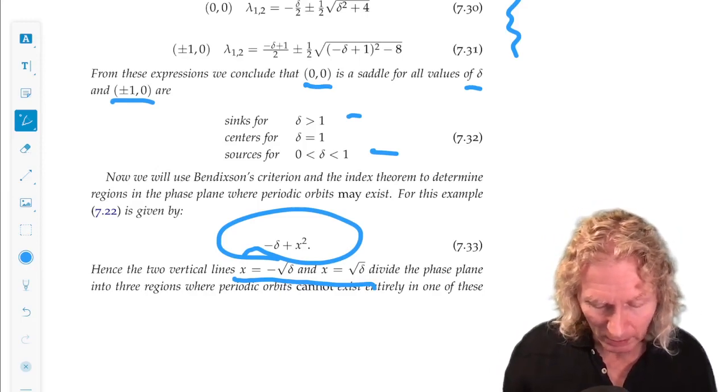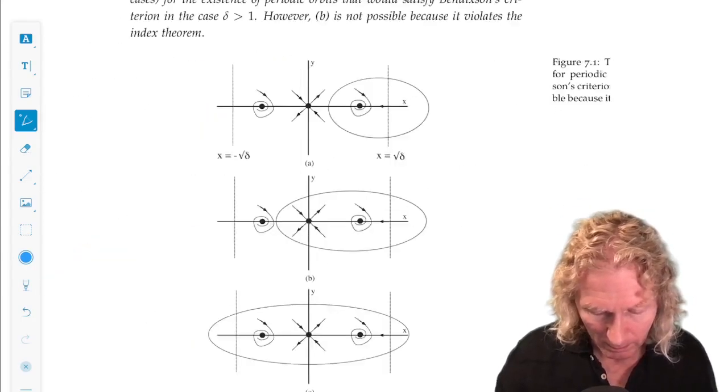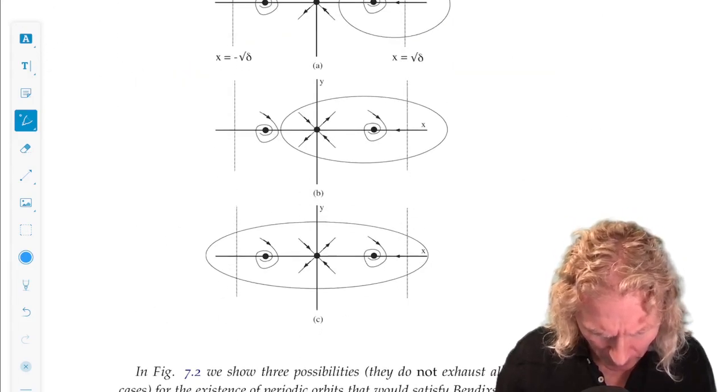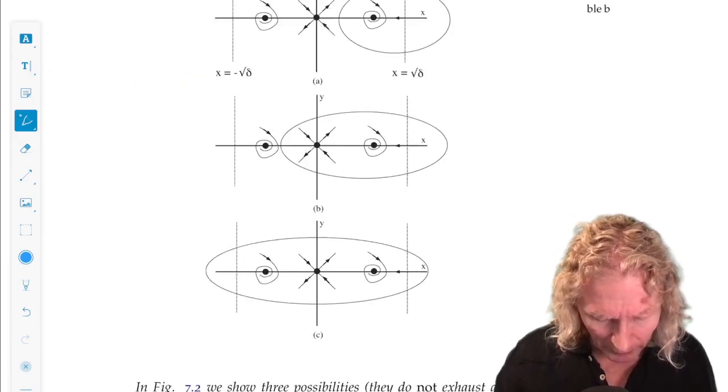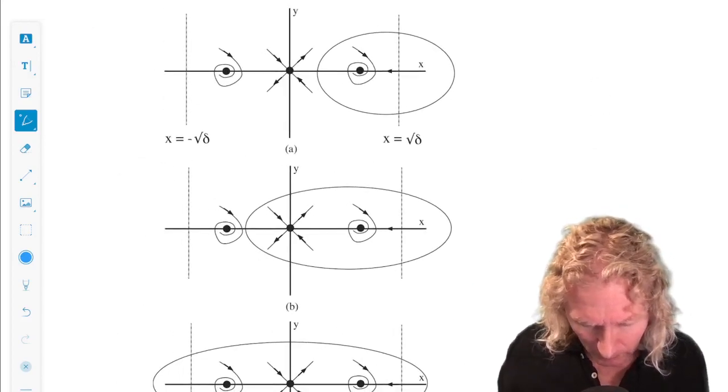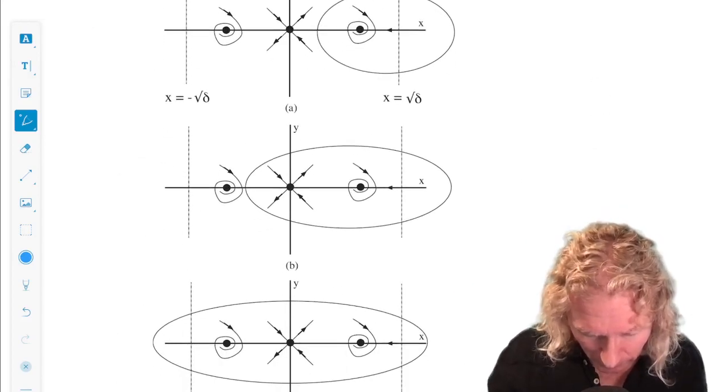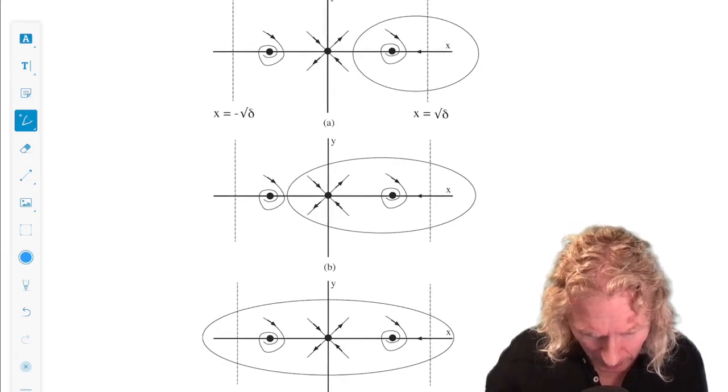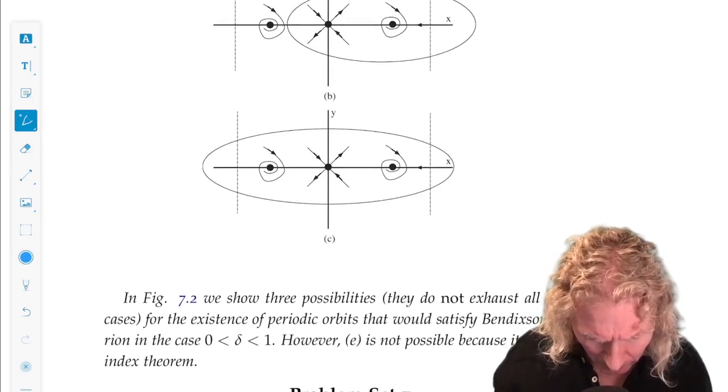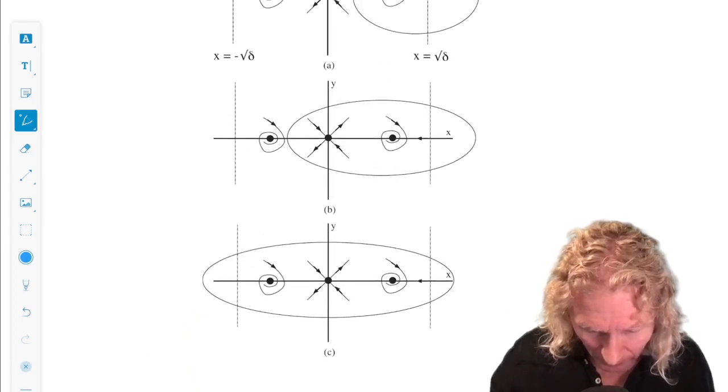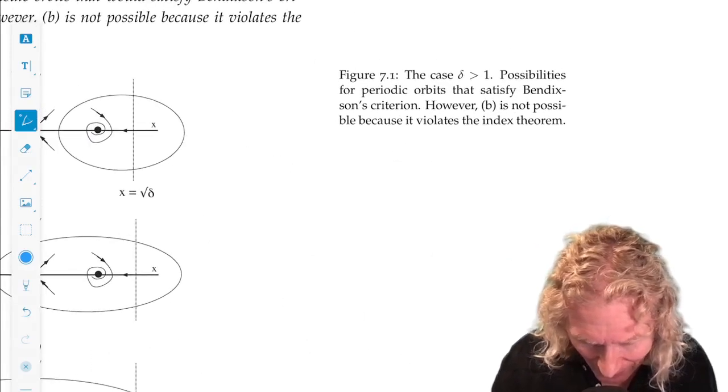All right. So let's look at two cases. This is going to be the case of 0 less than delta less than 1. Sorry, this is the case for delta greater than 1.